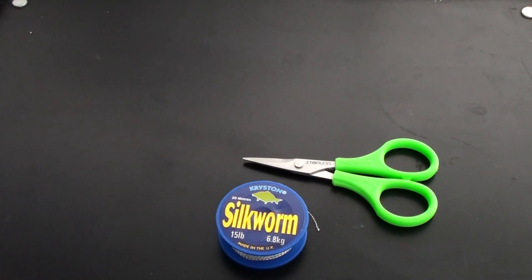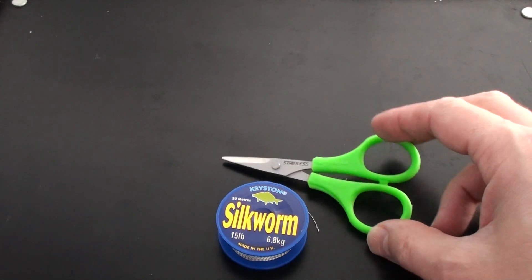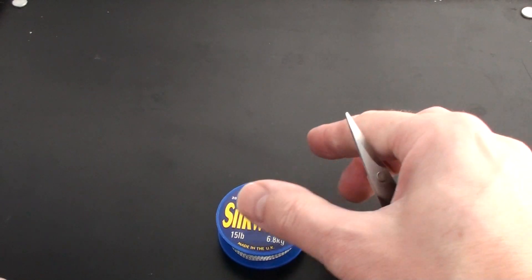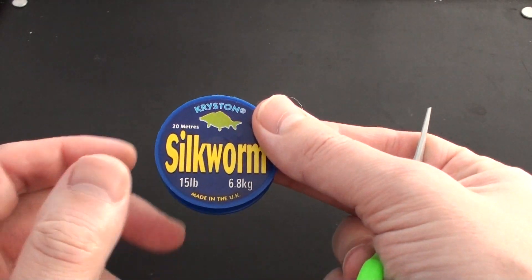Welcome to the first lesson of Carp Rigs. In this lesson, we are going to show you how to tie a simple loop. All we need for this is a sharp pair of scissors and some silkworm. This is an example hookling we are going to use in this lesson.